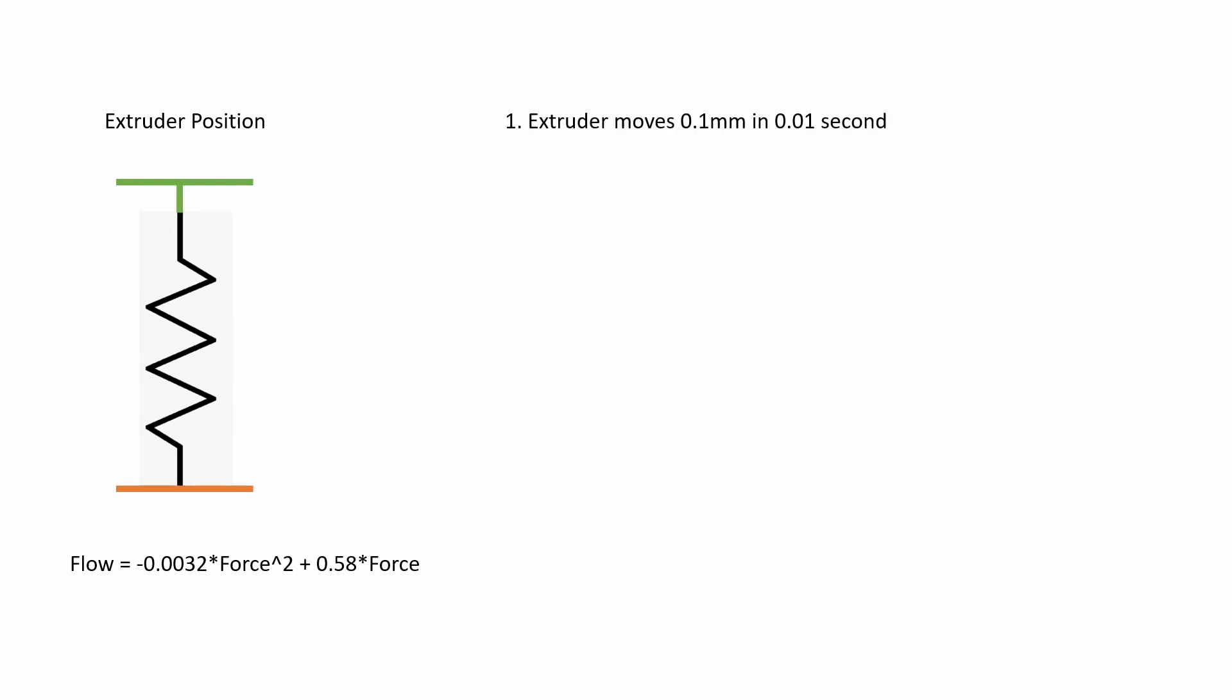We're going to move the extruder by 0.1 millimeters in this first time step, and you can see that the spring has compressed slightly because no flow has occurred at the hotend yet, so that filament in between the extruder and the hotend has been slightly compressed.